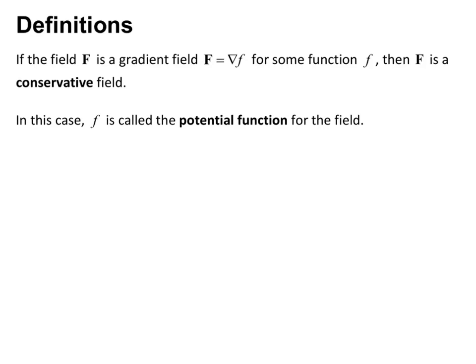In this case, lowercase f is called the potential function for the field. So if capital F is a gradient field, then the function whose gradient defines the field is the potential function.